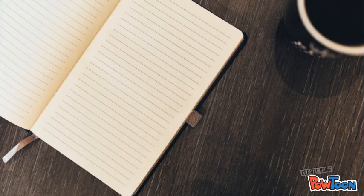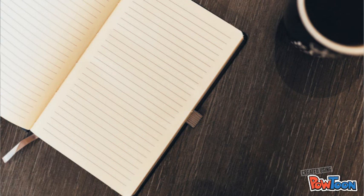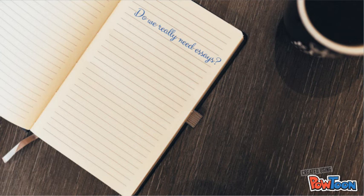The five-paragraph essay, once the definitive writing goal, is now antiquated. It was formulaic and predictable, and it served as a poor representative of authentic writing. We should banish any essay from the writing class. Authentic writing rarely comes in the form of essays. If teachers want students to demonstrate thought in written form, we must make it purposeful beyond the classroom.